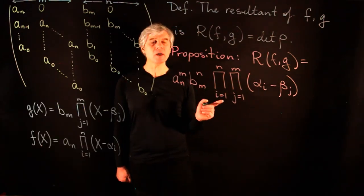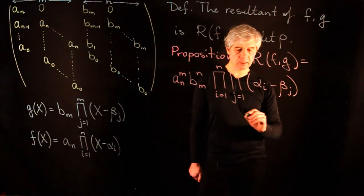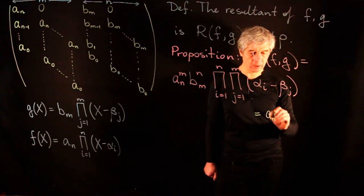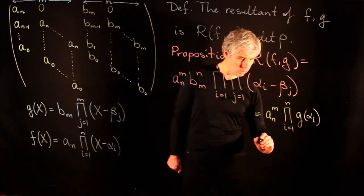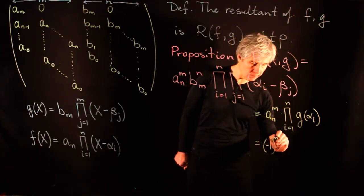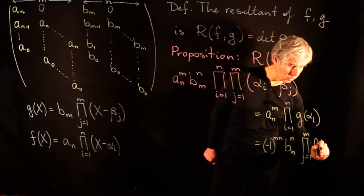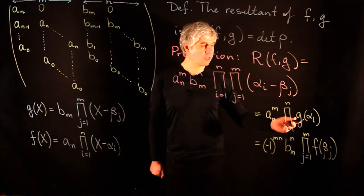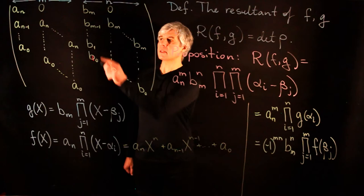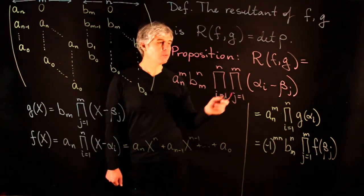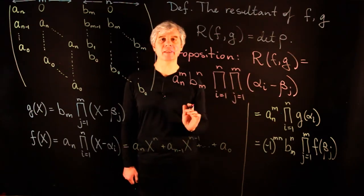Before giving the proof, note that using the polynomial formulas we can rewrite the right-hand side in two ways: it equals a_n^m · ∏_{i=1}^{n} g(α_i), or equivalently (−1)^{mn} · b_m^n · ∏_{j=1}^{m} f(β_j). This follows immediately by substituting x = α_i into g. The determinant is manifestly a polynomial in the coefficients a_i and b_j, while the right-hand side is a function of the roots and leading coefficients, with the transition given by Vietta's theorem.